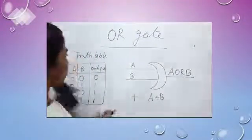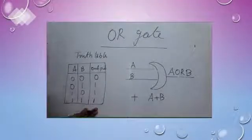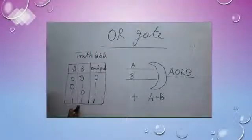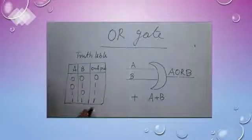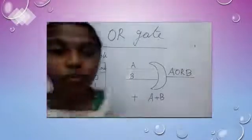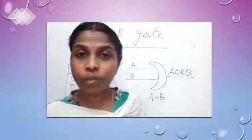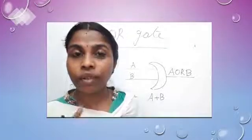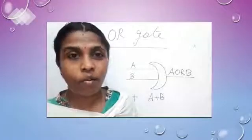One more point — you look at the truth table. From this truth table, we can say that in the case of OR gate, if any of the input is 1, the output is 1. In the case of AND gate, if all the inputs are 1, we get output as 1. But in the case of OR gate, if any of the input is 1, output is 1.